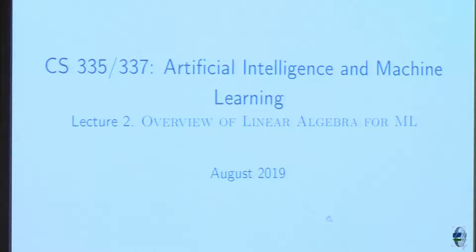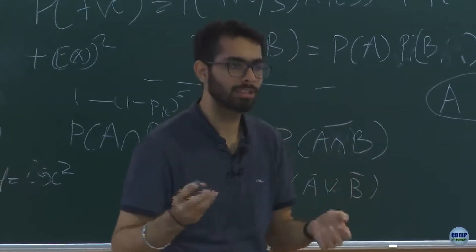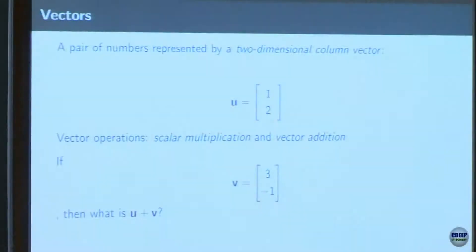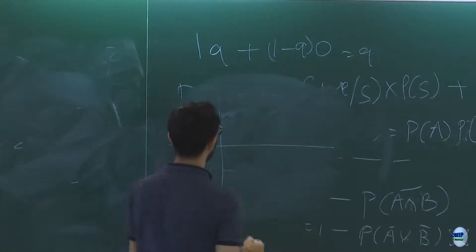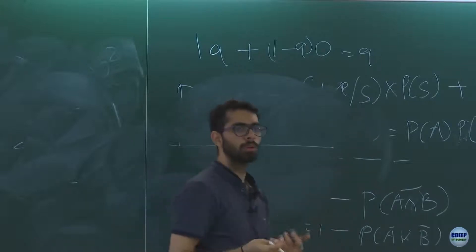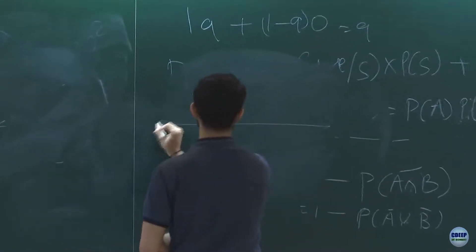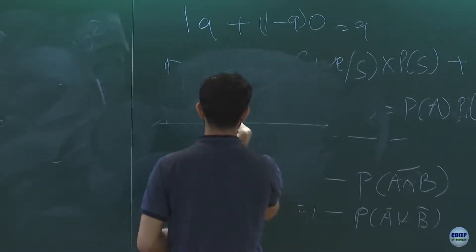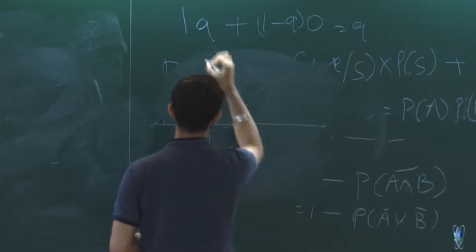I will give you an overview of linear algebra. First of all, what are vectors? It is a set of numbers that give us some direction, represented by some numbers on a coordinate system. We can represent it on a coordinate system and it will have a direction. For example, in the x-y coordinate system, this vector represents one in the i-hat direction and two in the j-hat direction.